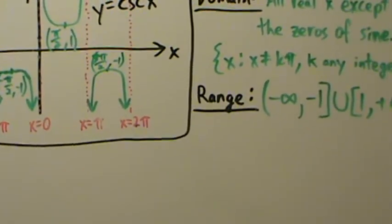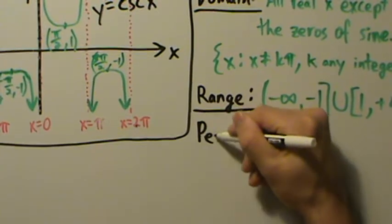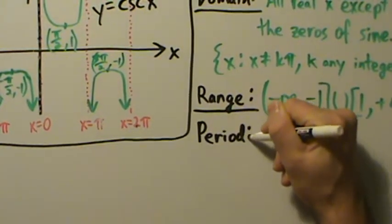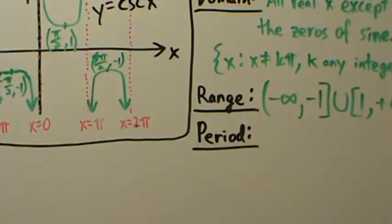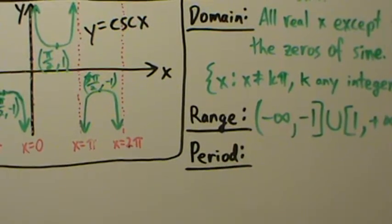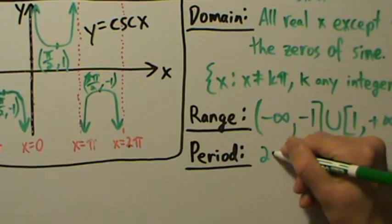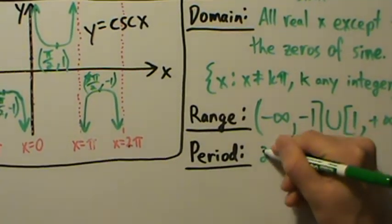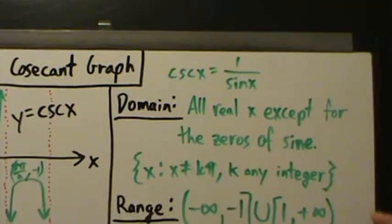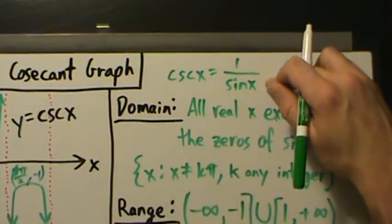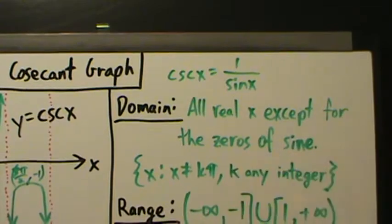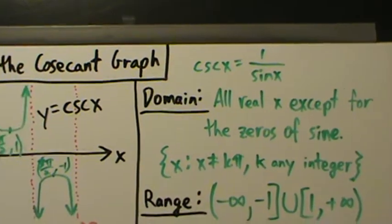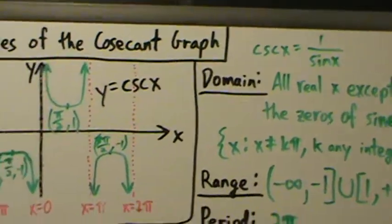How about the period? Relatively straightforward — we've actually used it before when evaluating cosecant at certain values of x. The period is just 2π. Because cosecant of x is 1 over sine of x, and the period of sine is 2π, taking the reciprocal doesn't change the period at all. So cosecant of x still has period 2π.